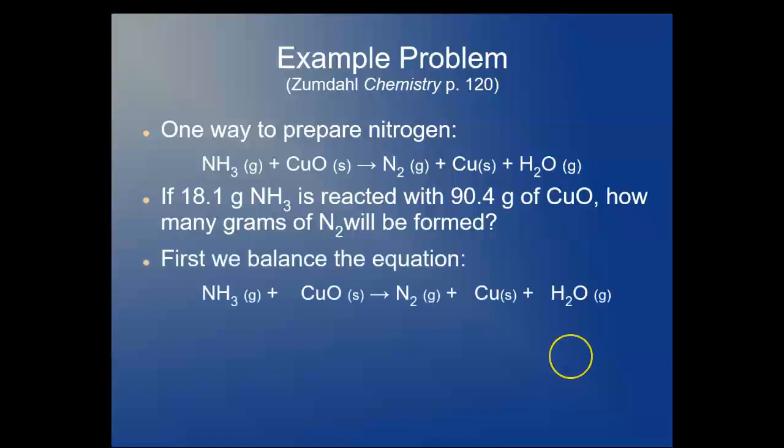First, of course, we have to balance the equation, and you can do that with redox balancing, but it's just as easy to do it by inspection. You've got two nitrogen atoms on the right, so you need a 2 in front of the ammonia, and that means you've got six atoms of hydrogen, so that's going to require three oxygens to make the water. You'll end up with three copper as a result, and there's your three waters. Everything's nice and balanced.